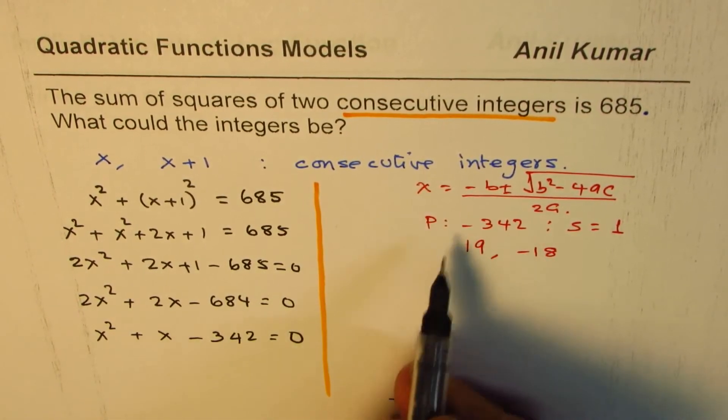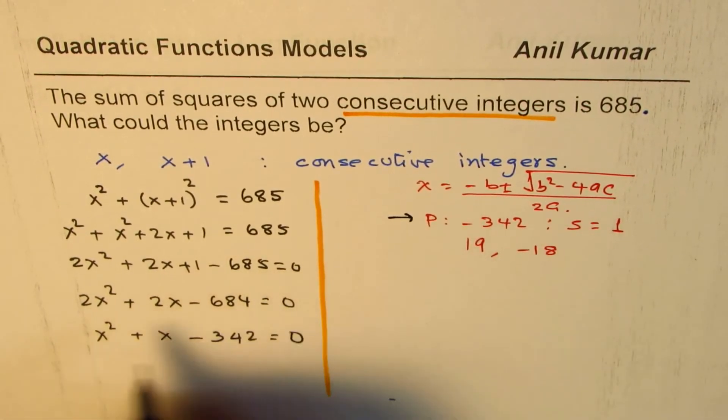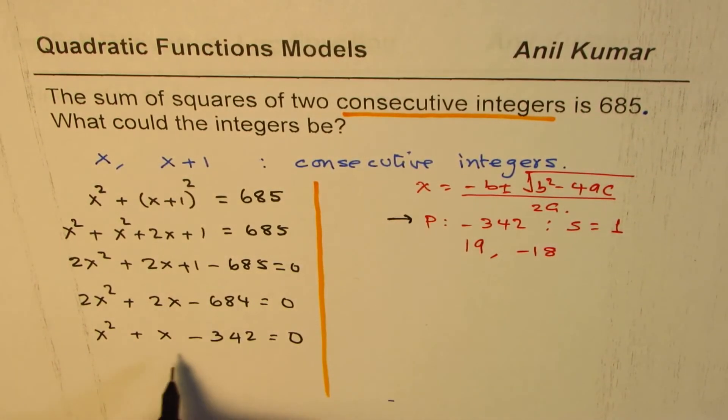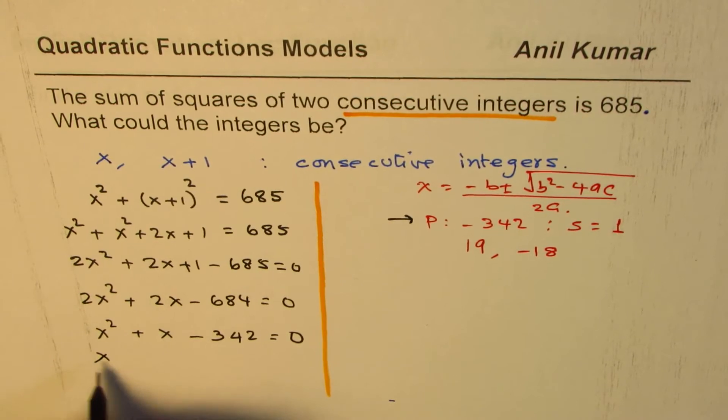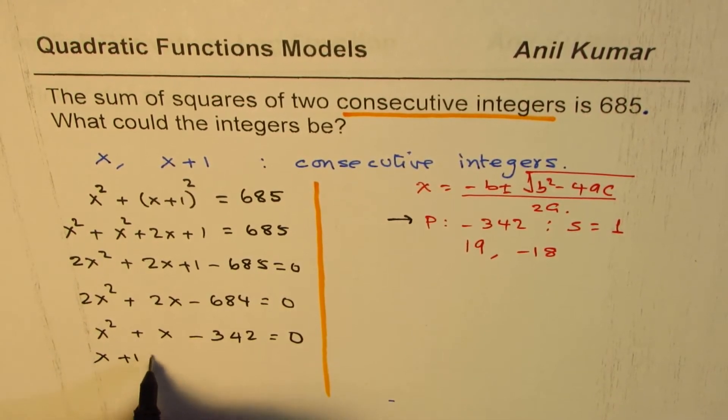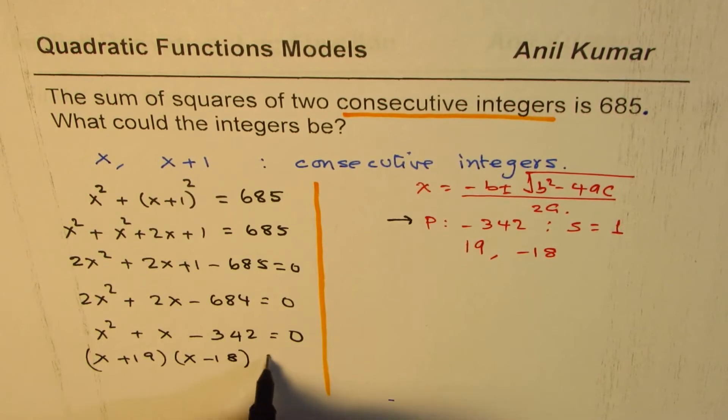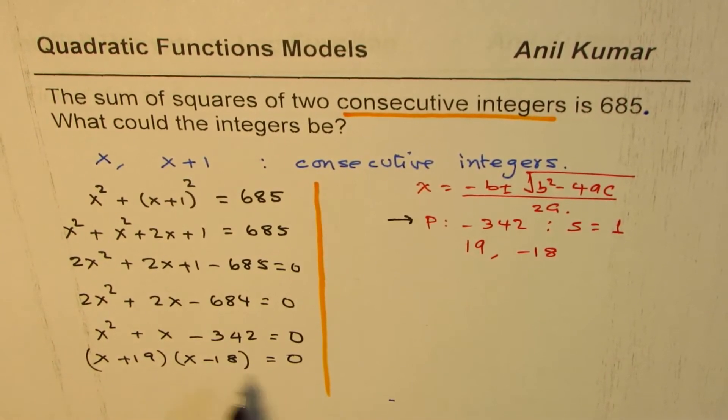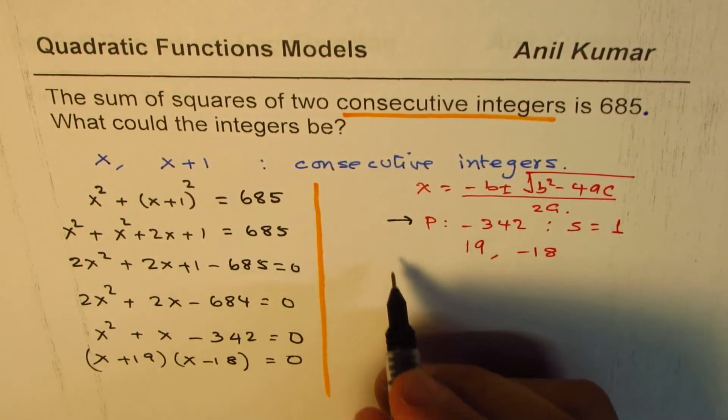I hope you love this idea of finding the two numbers for this. So using this method, I'm using product and sum, we could write this in factored form as x plus 19 times x minus 18 equal to 0. So we get factored form.